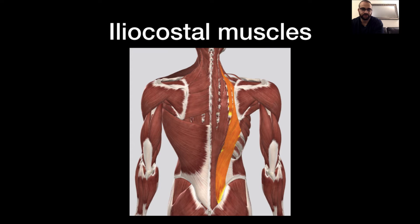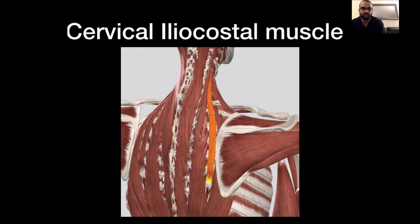The last muscle group of the first layer is the iliocostalis muscles, which also consist of three parts: the cervical, thoracic, and lumbar parts. The cervical iliocostalis originates at the six upper ribs and inserts at the transverse process of C4 to C6. When these muscle fibers contract, they pull the muscle down, extending the neck and rotating the neck to the side.